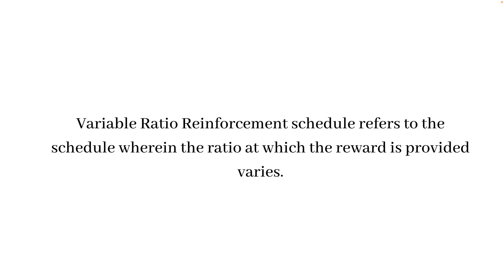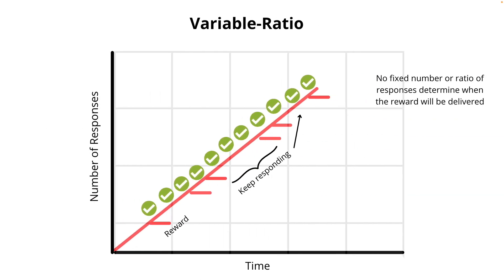The variable ratio reinforcement schedule refers to the schedule wherein the ratio at which the reward is provided varies. In other words, the response is reinforced after an unpredictable number of responses, unlike the fixed ratio wherein reinforcement occurs after a specific ratio. This is the most powerful type of partial reinforcement schedule, and a key advantage is that it creates a steady and high-rate response of the desired behavior.